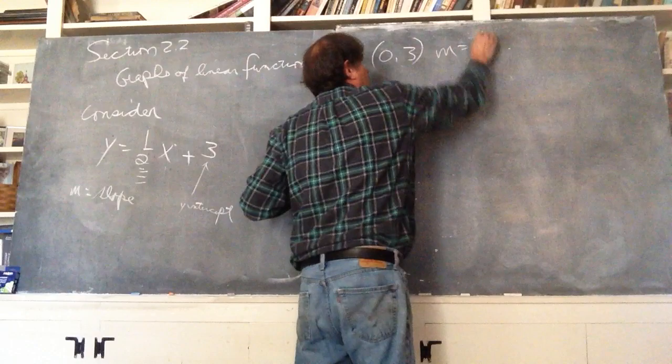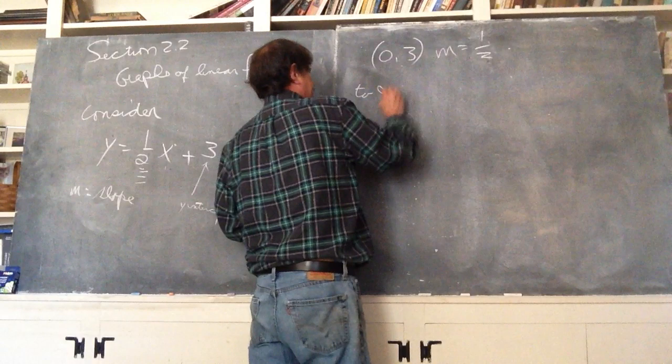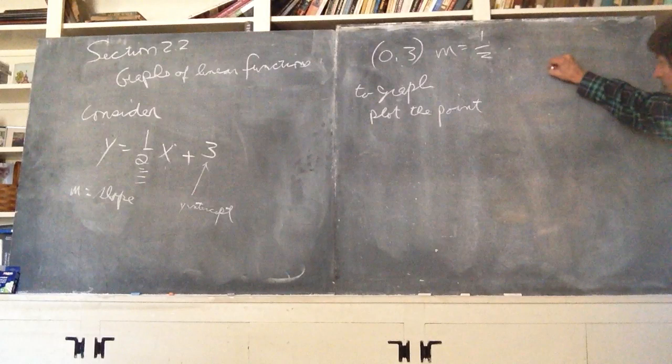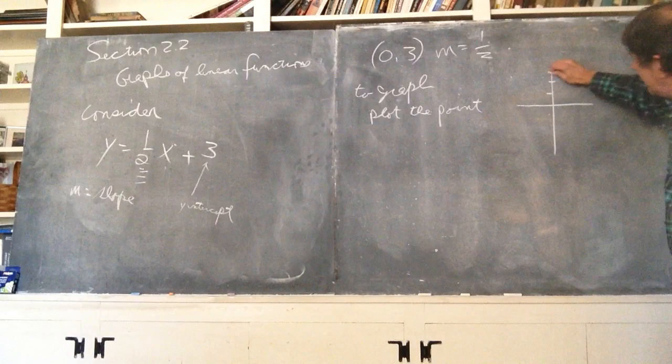So what you want to do is plot a point first to graph. Plot a point. If you have the intercept, that's the point you want. So I'm going to do that and I'll go to the other side. And so here is a coordinate plane and I want zero, three, one, two, three, up there. I plotted the point.